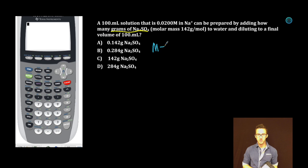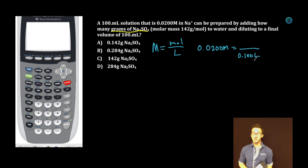A great way to convert to moles is using our molarity equation, which is equal to moles per liter. We know the concentration is 0.0200 molar in sodium ion. So let's figure out how many moles of sodium ion that is. We've got a 0.100 liter solution. So how can I solve for moles?